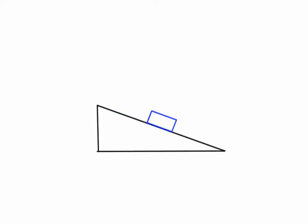In the last video, we showed a person standing on a hill and calculated the free body diagram for that person. What we're going to do here is start with a box on a hill, where the hill is at an angle of theta with respect to the horizontal.